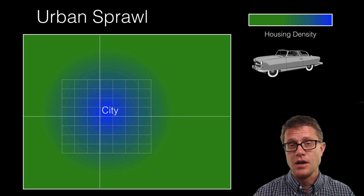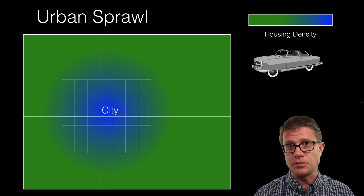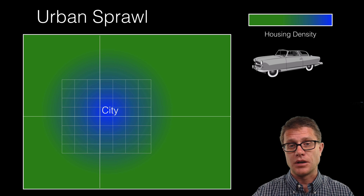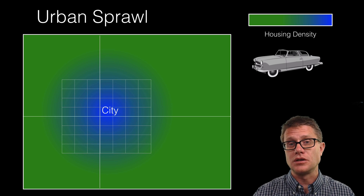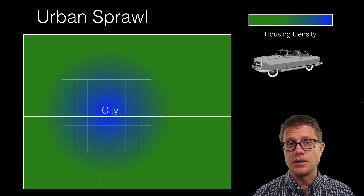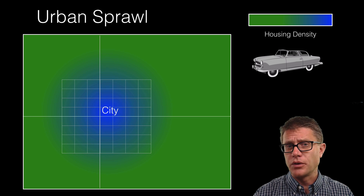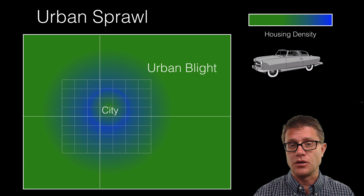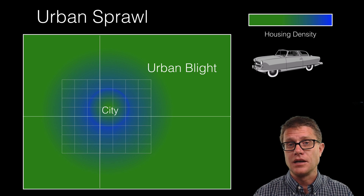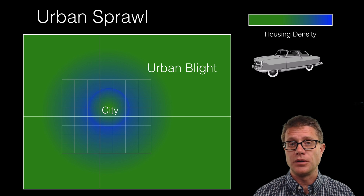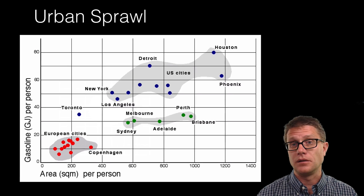This is a positive feedback loop. The more people move out, the more roads there are, the more tax base there is, and we are going to get more movement out — encroaching into the area around the city. People are also bringing their tax base with them, and so that leaves urban blight areas on the inside of the city where people are not actually living.